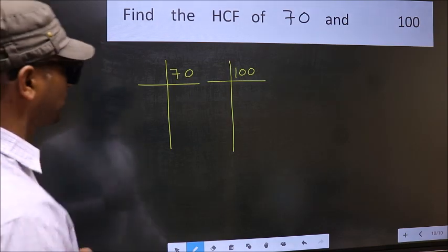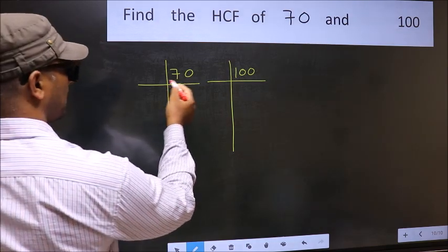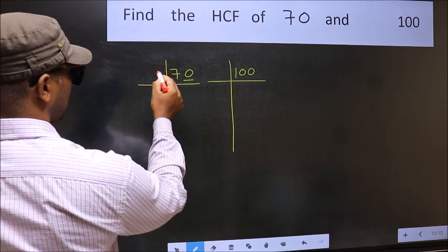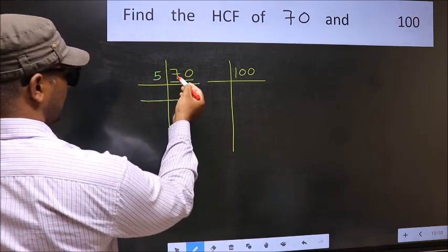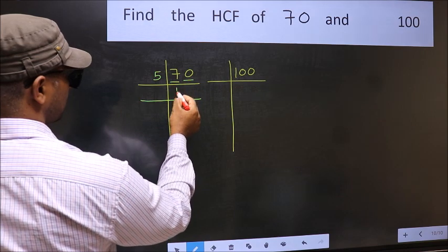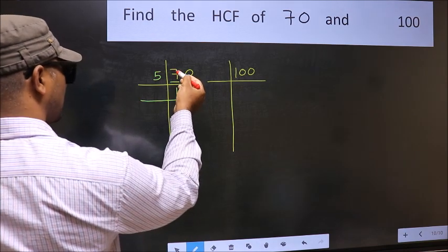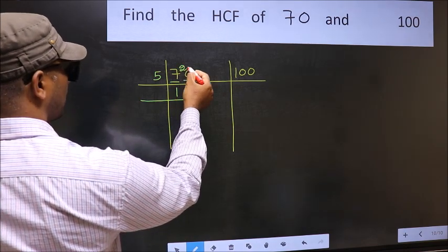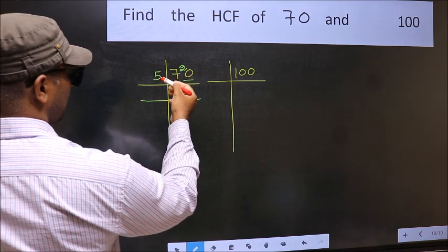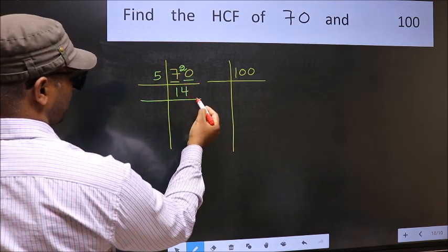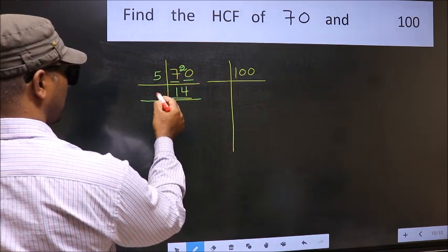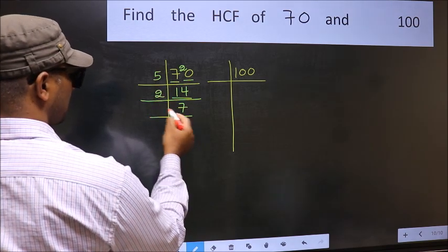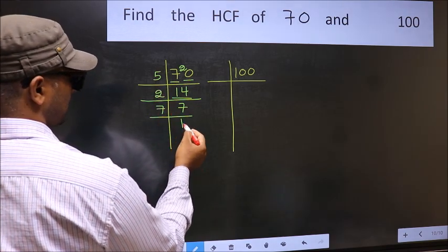Next, in this number, last digit is 0 so take 5. First number 7, a number close to 7 in 5 table is 5 once 5. 7 minus 5, 2, 2 carried forward 20. When do we get 20 in 5 table, 5 fours 20. Now 14 is 2 7s 14. 7 is a prime number so 7 once 7.